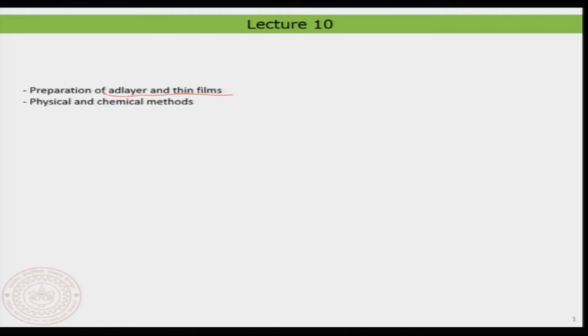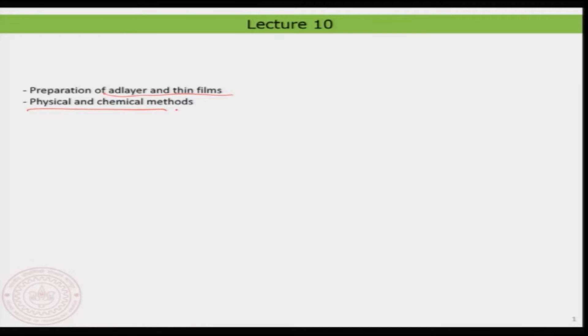In today's lecture we will be looking at the preparation of add layers and therefore finally thin films, because if you put more and more add layers on top of a surface you would eventually make a thin layer. We will mainly focus on two different types of methods: physical and chemical methodologies.